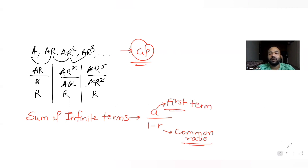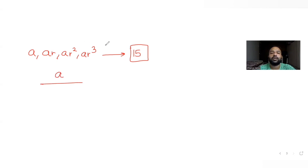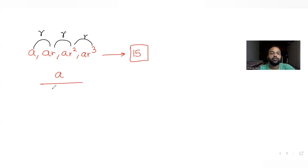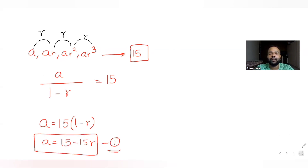For the first sequence a, ar, ar², ar³..., the sum is given as 15. The first term is a and the common ratio is r, so applying the formula: a/(1 − r) = 15. From this, a = 15(1 − r), which gives us a = 15 − 15r. This is our first equation.